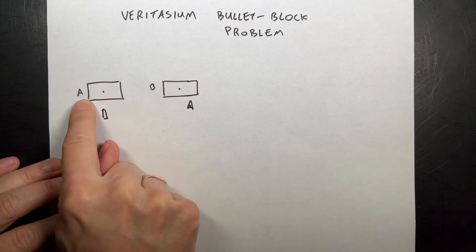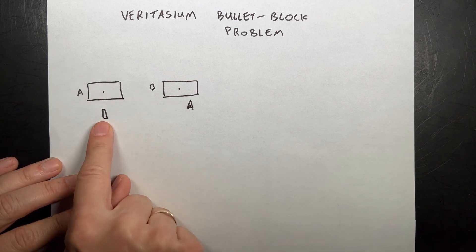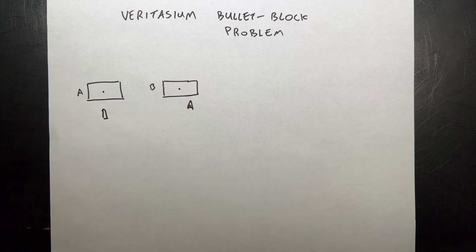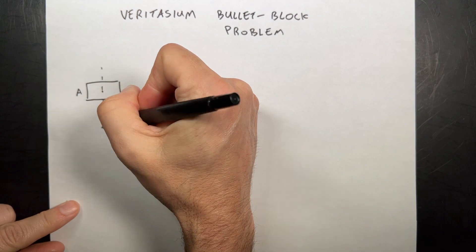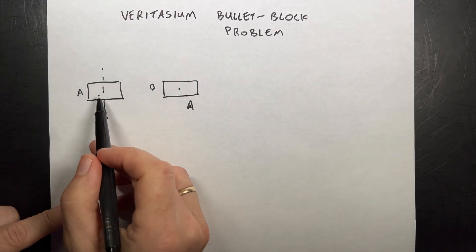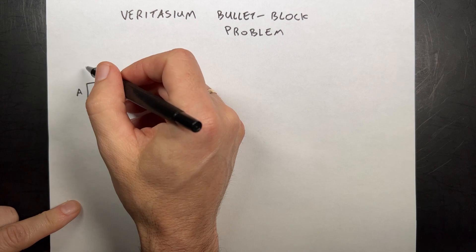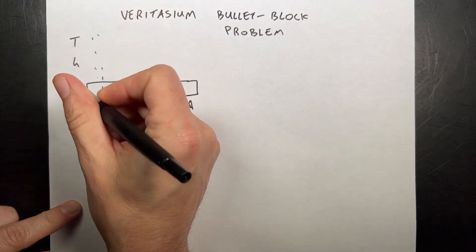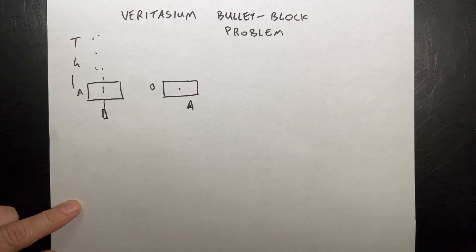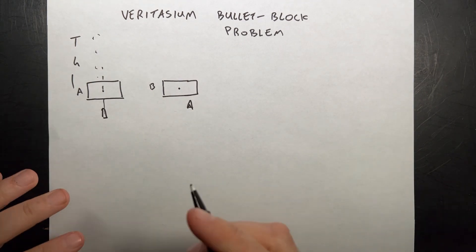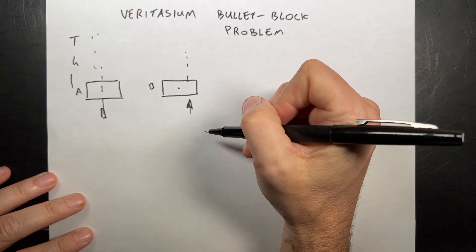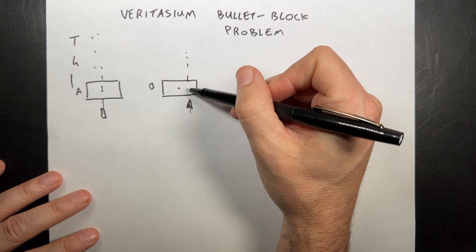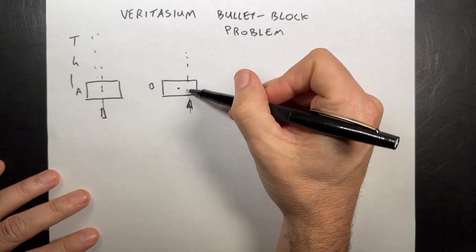The idea is to take a block of wood — block A — and have a bullet shot directly into the center of mass. The bullet gets embedded in the block, which goes up to some height H and comes back down. Now the question is: what if somebody shoots the same bullet into the same block but now off center?